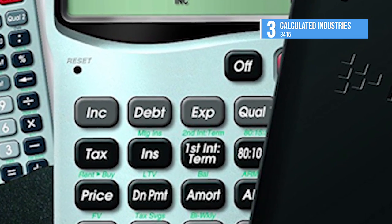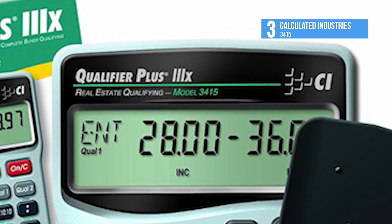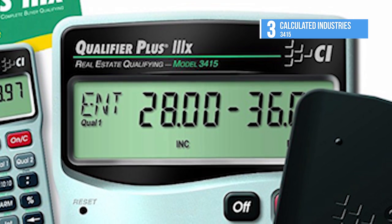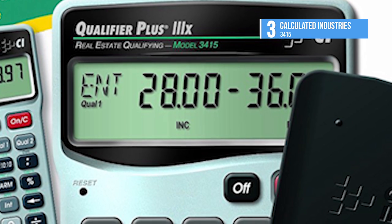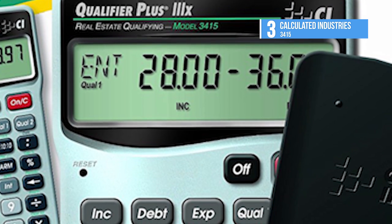The Qualifier Plus 3x has an auto shutoff feature that turns the calculator off after about 8 to 12 minutes of non-use and it is backed by a one-year limited warranty.